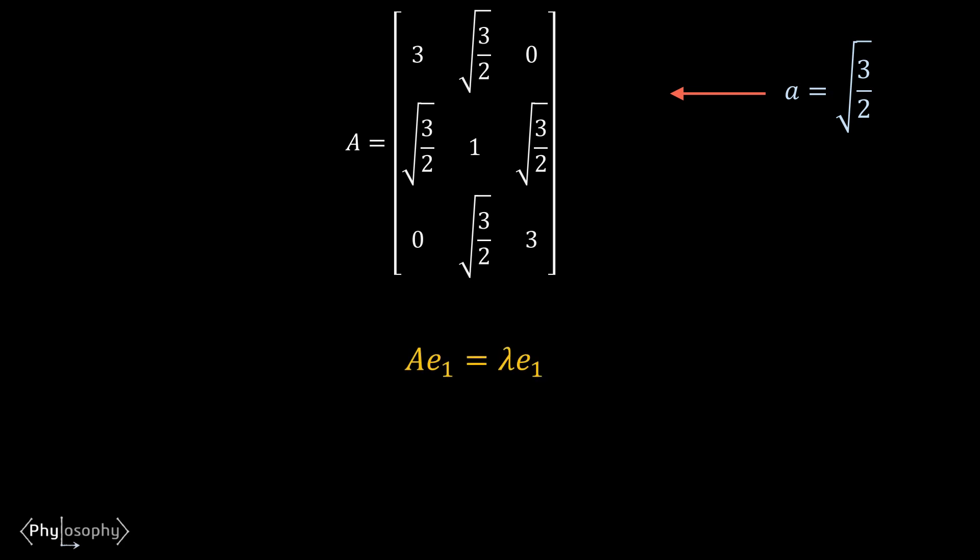If e1 is the eigenvector of matrix A, then it should satisfy the equation A·e1 = λ·e1, where λ is the eigenvalue corresponding to eigenvector e1 of matrix A. We have to check for each eigenvector given in the options which satisfies this equation and for which λ is minimum.